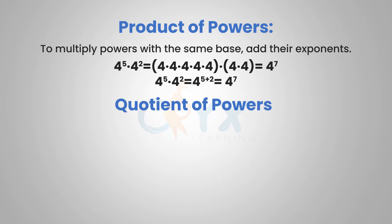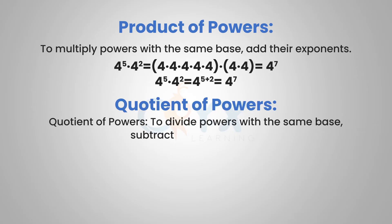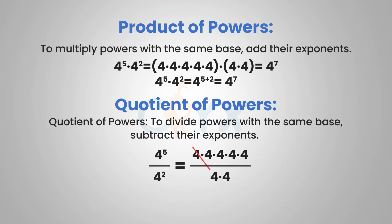The quotient of powers property says to divide powers with the same base, subtract their exponents. For example, if we have 4 to the 5th divided by 4 squared — two monomials divided by one another with the same base — we can subtract their exponents, so 5 minus 2 would give us 4 to the 3rd.